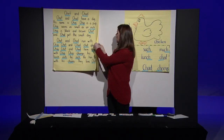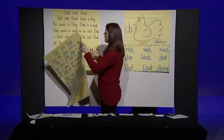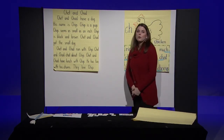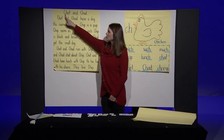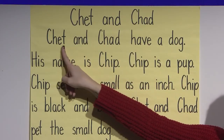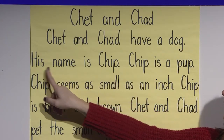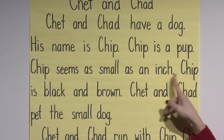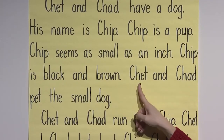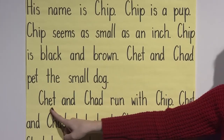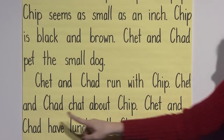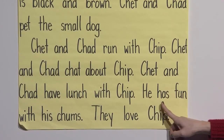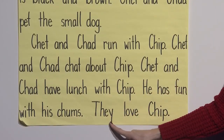Before we finish up for today, we're going to try to read that story one more time — this time without all of the CH words underlined, so you're going to have to be looking for those CH words as we go through. Here we go, read with me at home: Chet and Chad. Chet and Chad have a dog. His name is Chip. Chip is a pup. Chip seems as small as an inch. Chip is black and brown. Chet and Chad pet the small dog. Chet and Chad run with Chip. Chet and Chad chat about Chip. Chet and Chad have lunch with Chip. Chip chomps his lunch. He has fun with his chums. They love Chip.